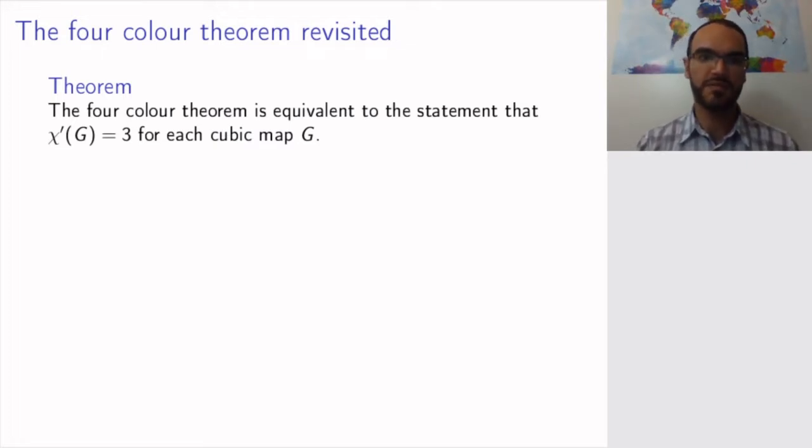So remember, the four-color theorem says that any map can have its faces colored in four colors, so that no two faces that share an edge have the same color. We showed that this was equivalent to the four-color theorem for vertices of a planar graph, and we also showed that to prove it for any map, it's enough to consider cubic maps.